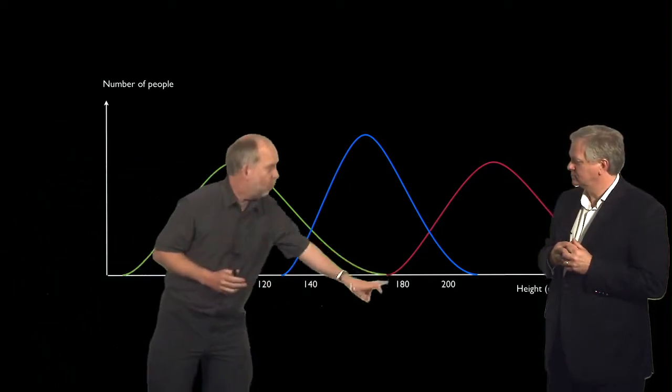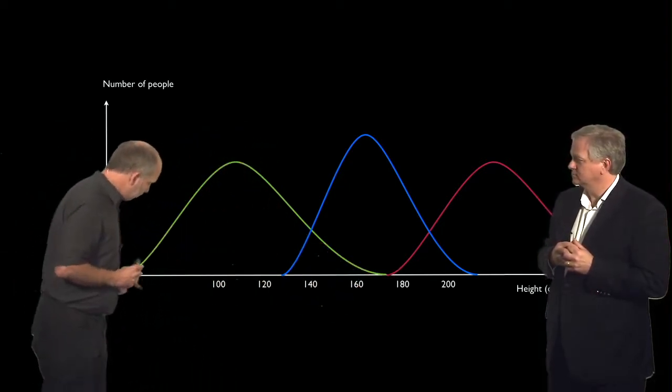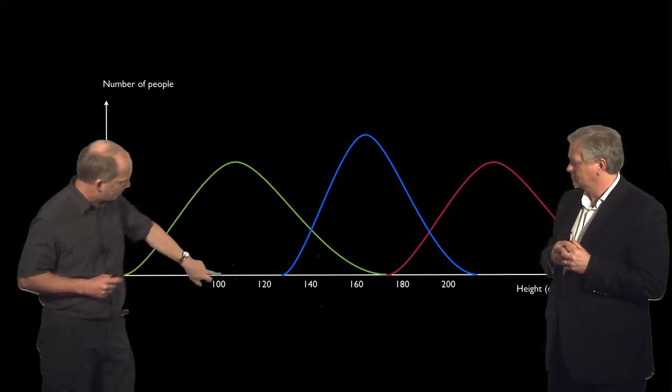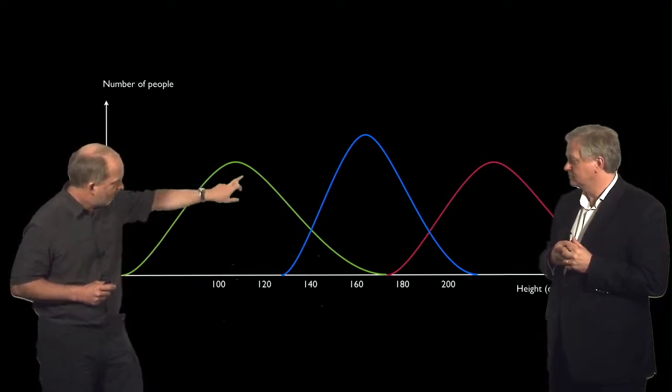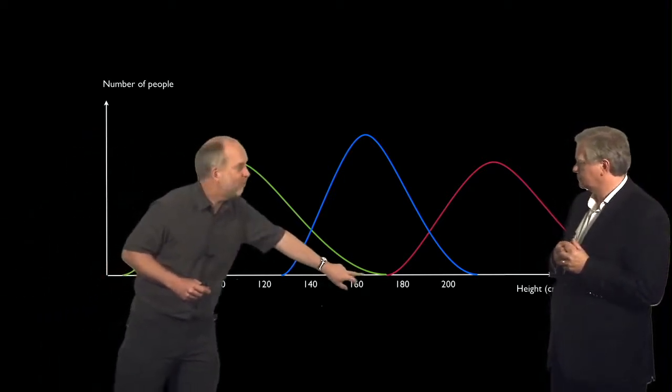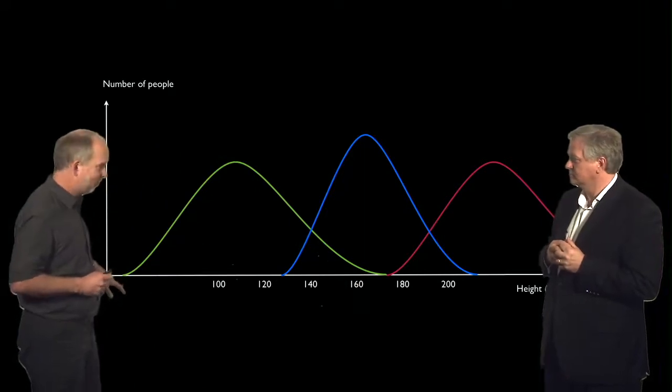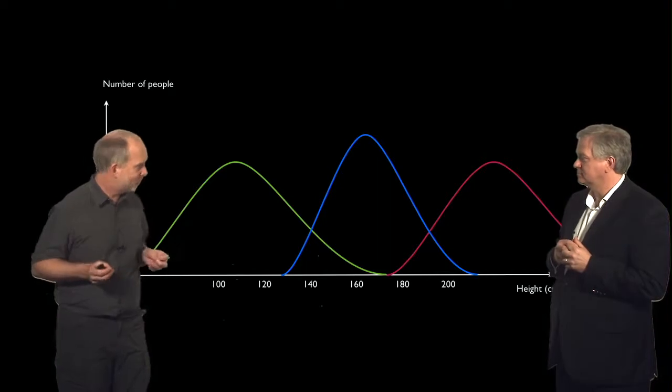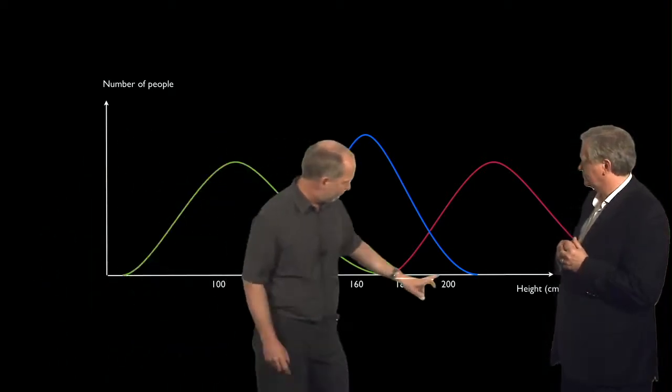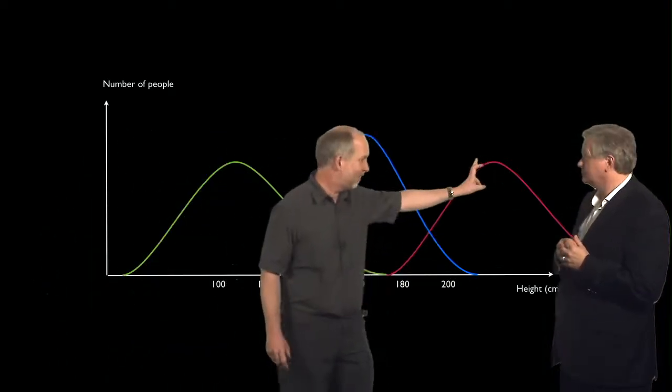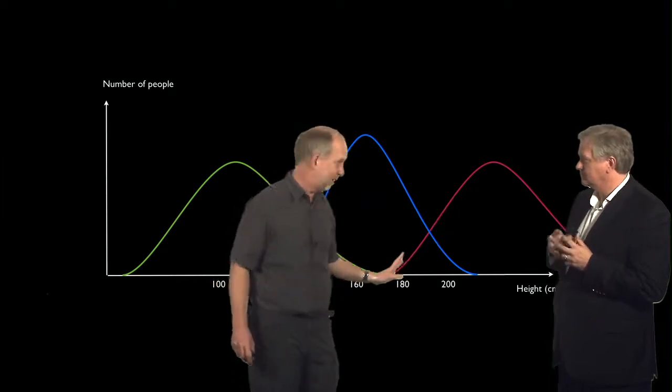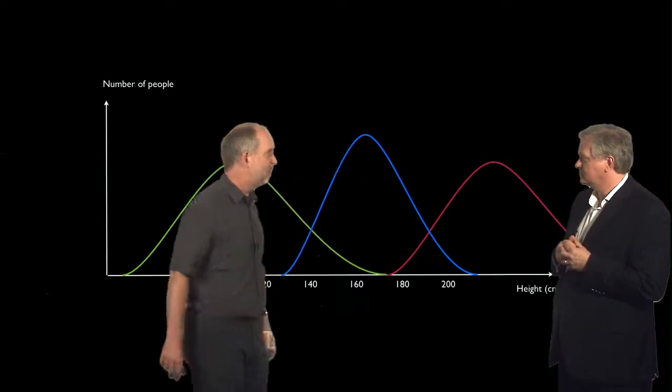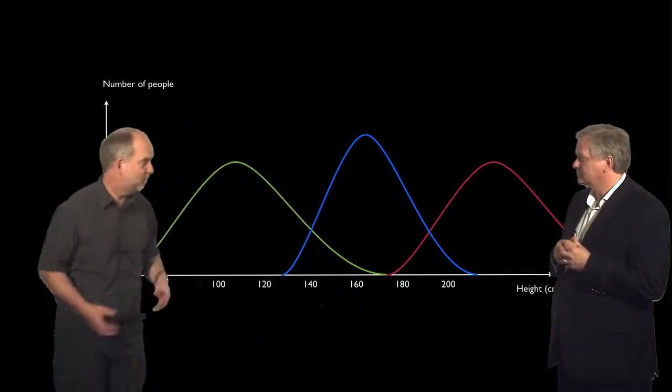This is the height of humans, and hypothesis number one says the distribution of heights is something like this green line over here. It says the most typical height is about one meter, 100 centimeters, and a few really tall people might get up to 160 or 170 centimeters, and small people might be down the size of 70 or 80 centimeters. So that's the small-person hypothesis. And then there's the tall-person hypothesis that the average height is like 2.5 meters, and a few really short people might be down around 180 centimeters. Or there's the middle hypothesis that, in fact, the average height is maybe about 170 centimeters.